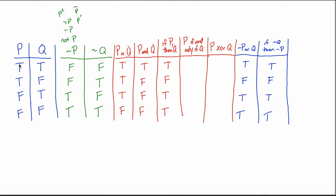The same thing works with 'not Q' — you could write it as Q with a bar on top, Q apostrophe, the tilde symbol in front of Q, or Q complement. It's not just the 'not' symbol that can be written in different ways; it turns out all of these logical connectives can be written in different ways.